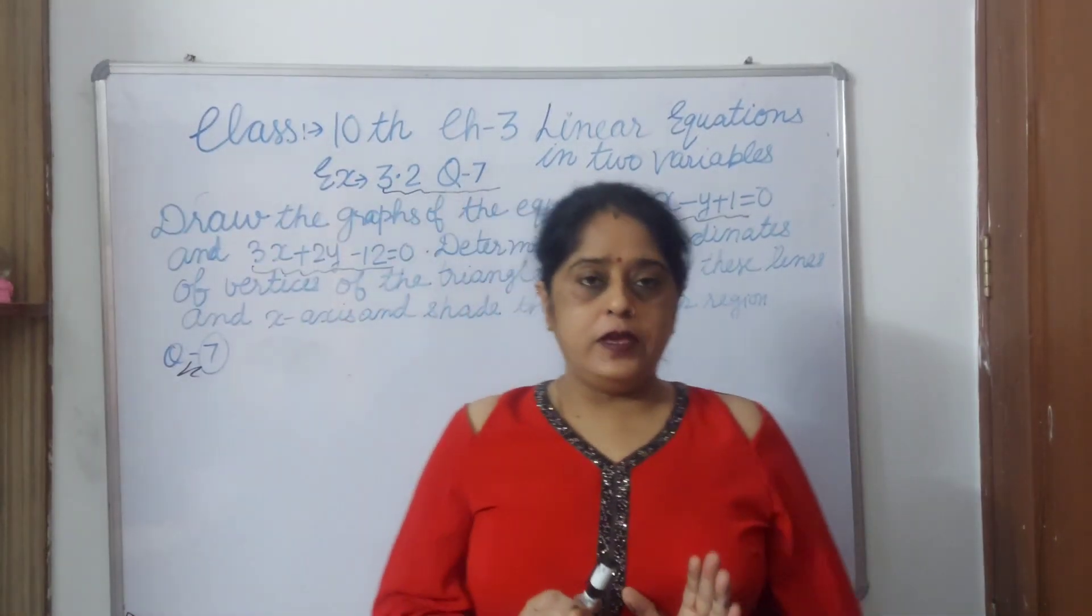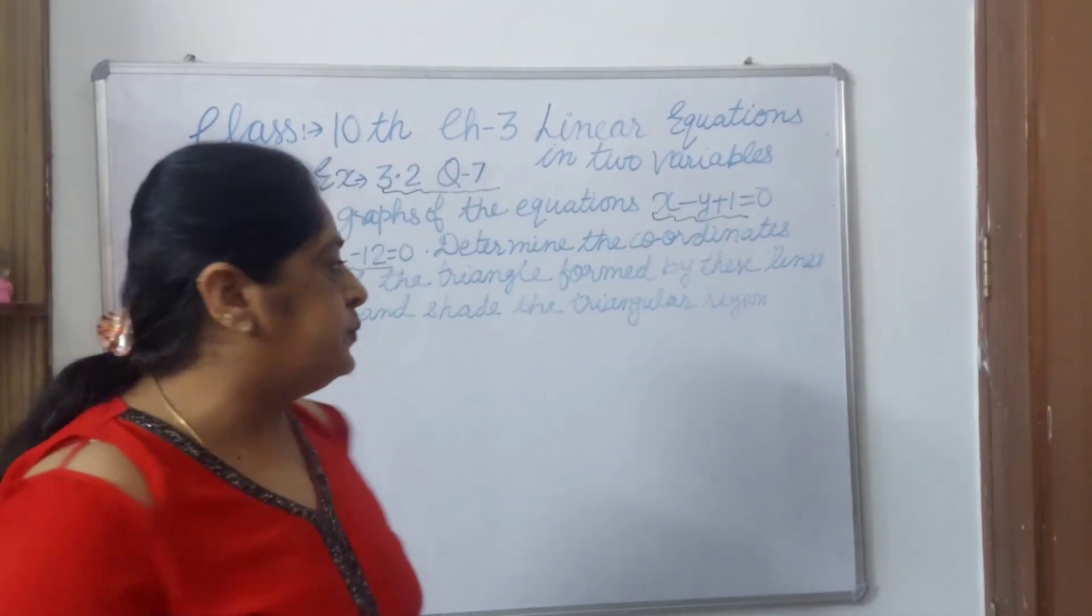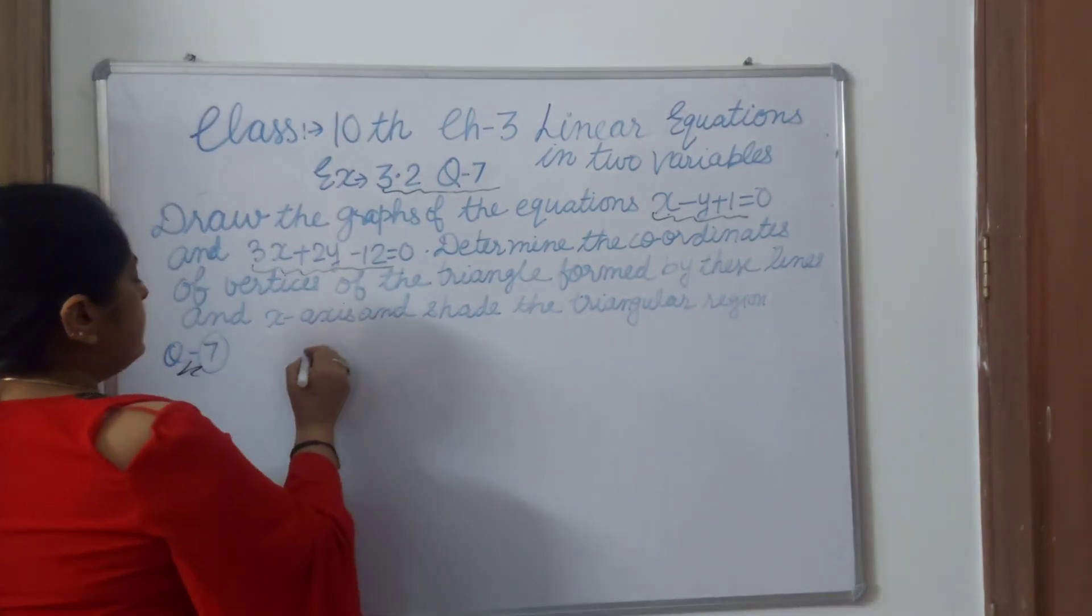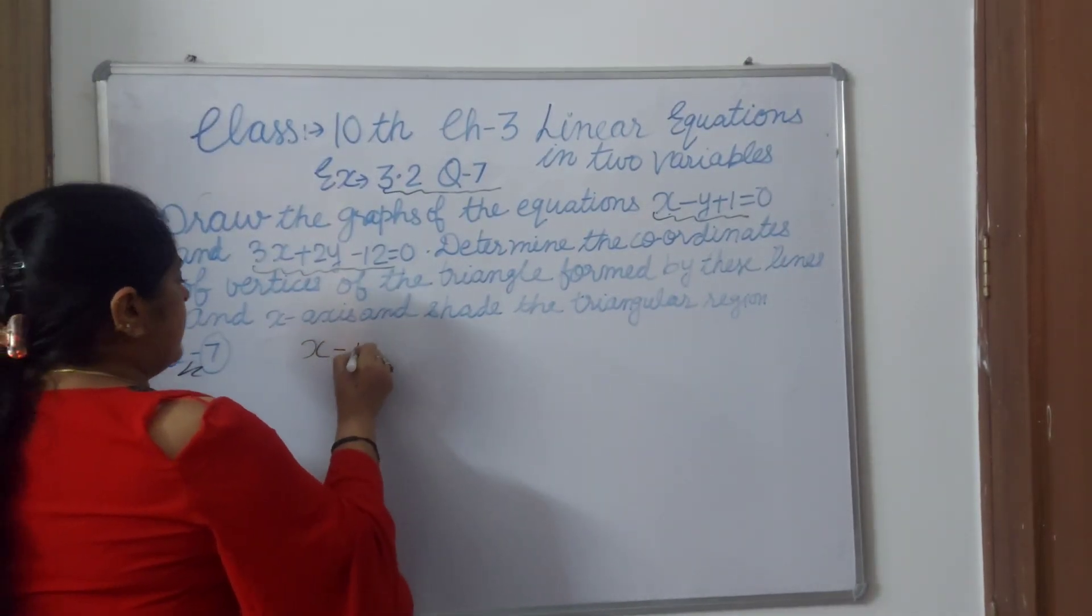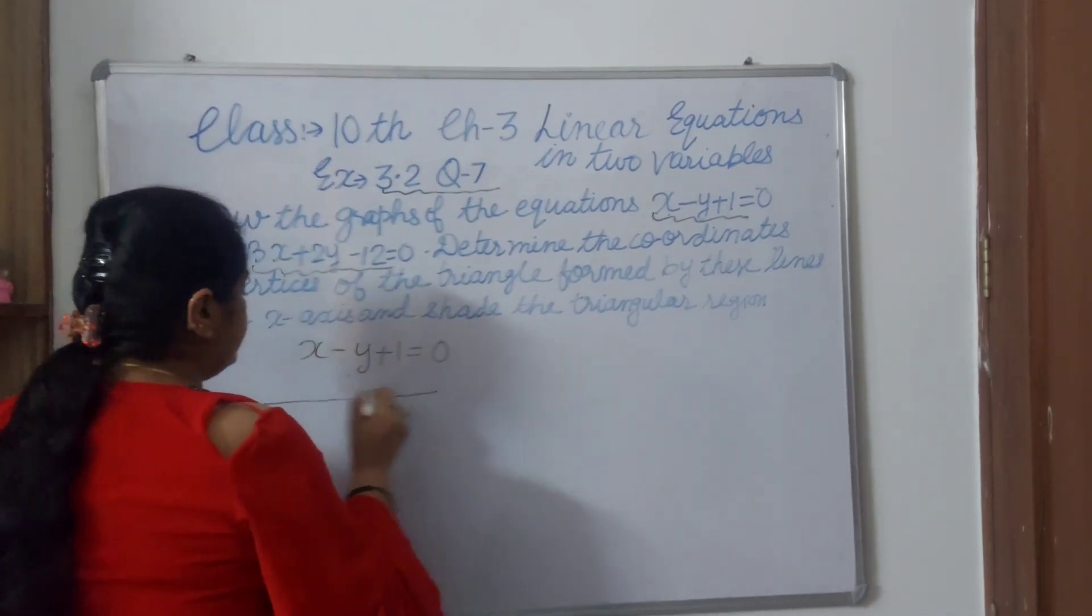First of all, we make a table and we will draw the graph. Then side by side I will tell you what to do. First equation is x minus y plus 1 equals 0. We will draw a table.